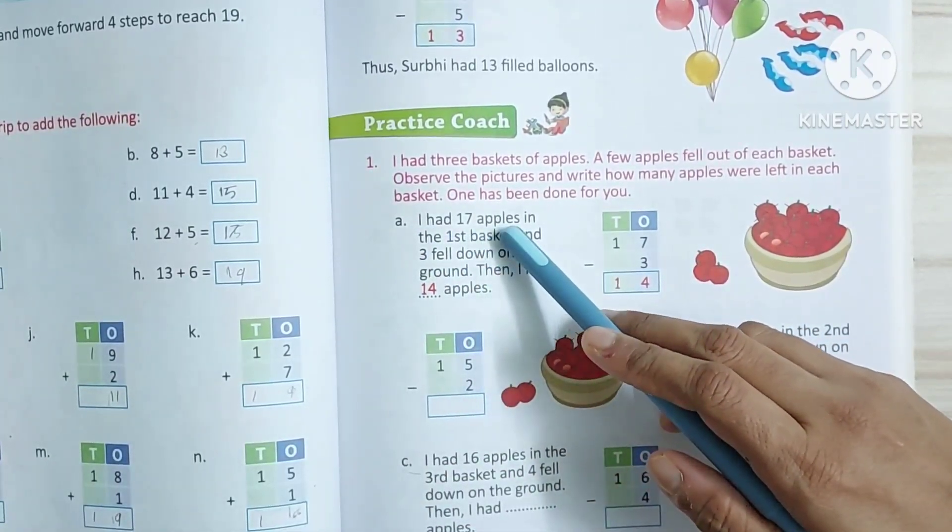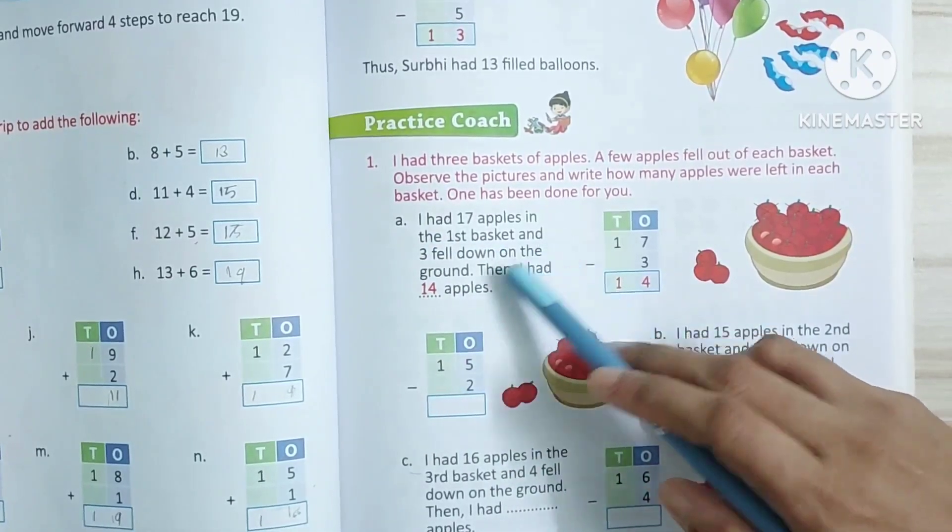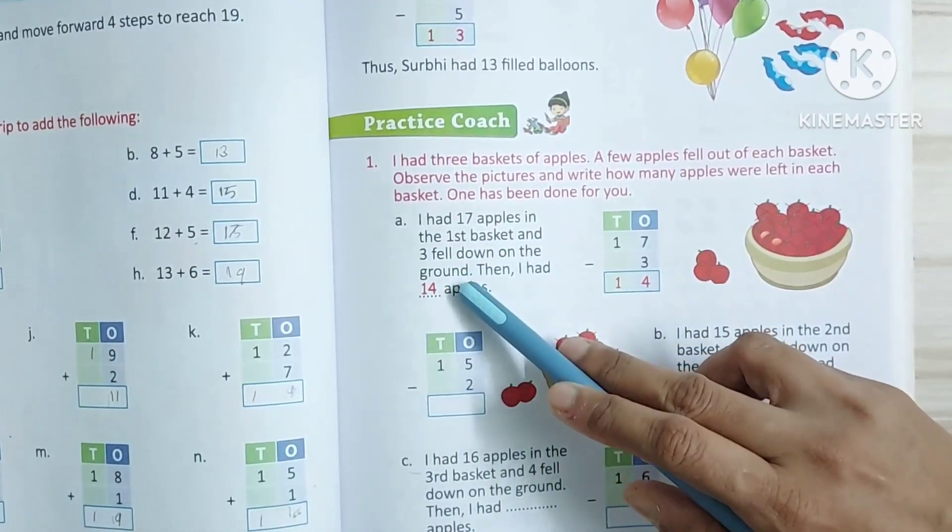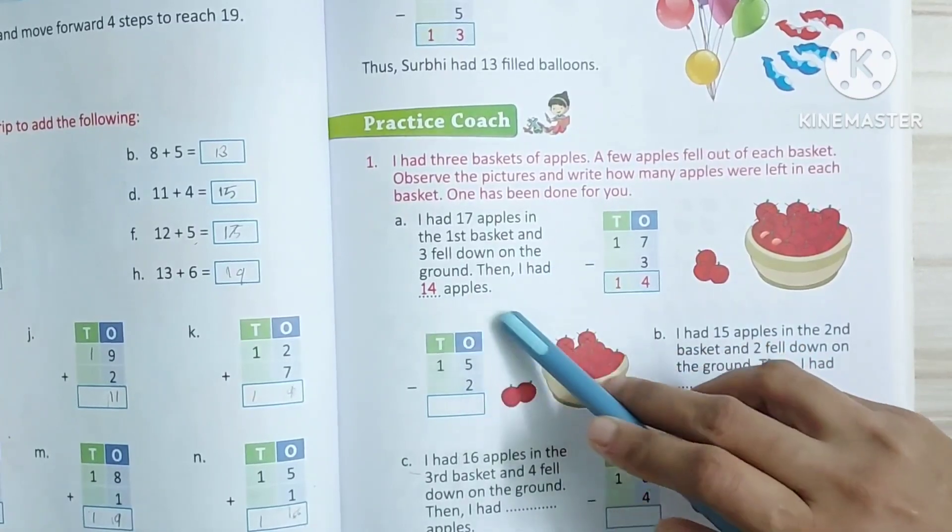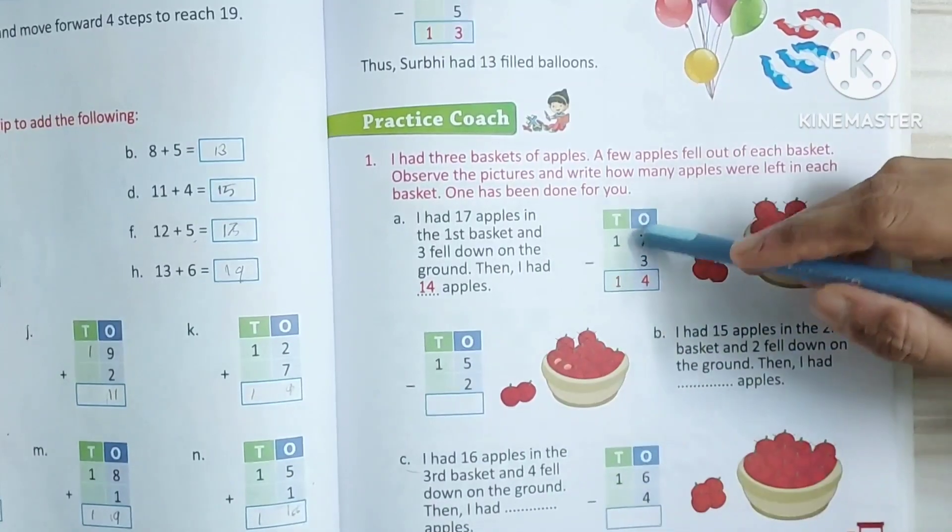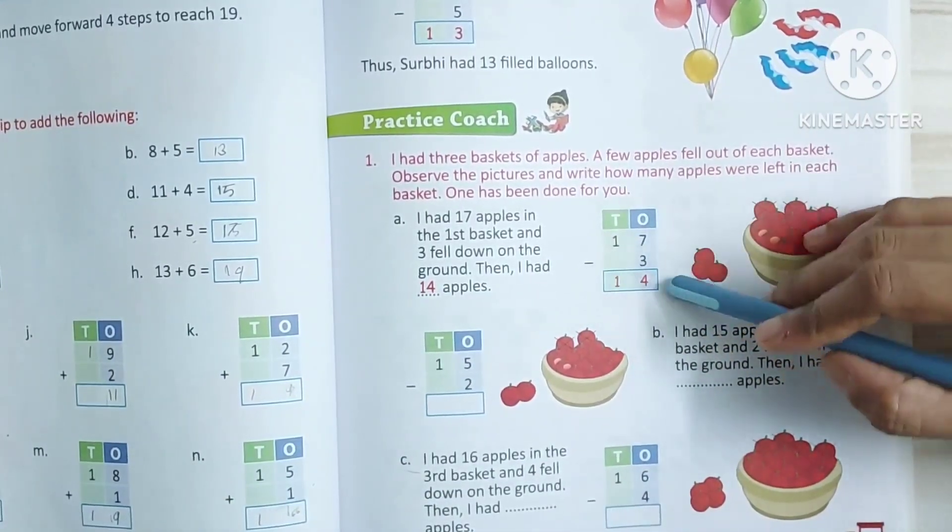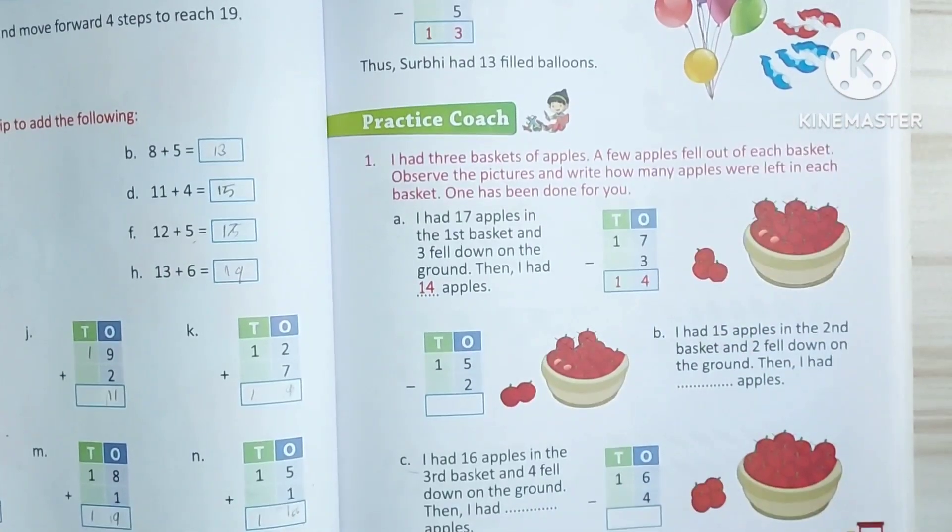I had 17 apples in first basket and three fell down on the ground. Then I had 14 apples. So, 17 minus 3. One has been done for you.